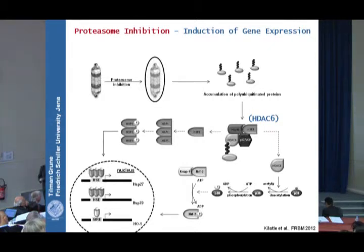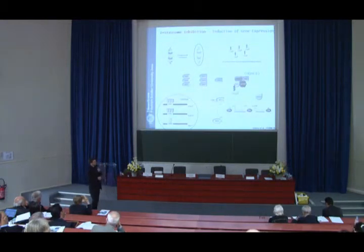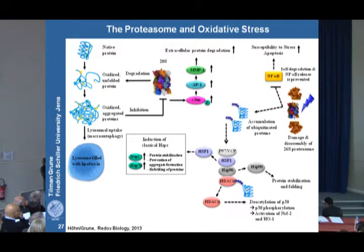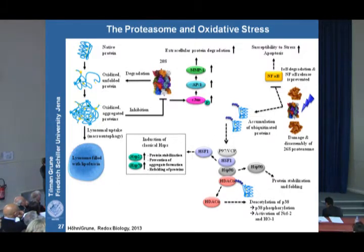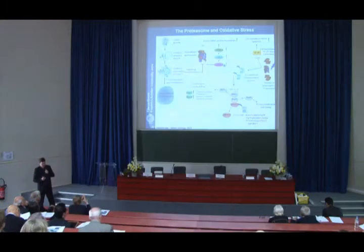More and more data suggest that HDAC6 is also involved in macroautophagy regulation, making it a key player in maintaining protein homeostasis. This brings us to the finding that even oxidized protein aggregates have effects in the cell — they lead to proteasome inhibition, accumulation of ubiquitinated proteins, and various stress responses to combat proteotoxic stress.